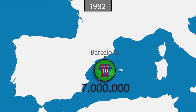In 1991, the first Women's World Cup is held in China and is won by the US team. Three years later, the United States organizes the World Cup. A reunified Germany participates for the first time, as well as Russia after the fall of the USSR. The final between Brazil and Italy is the first final to end in a penalty shootout — Brazil wins three to two.